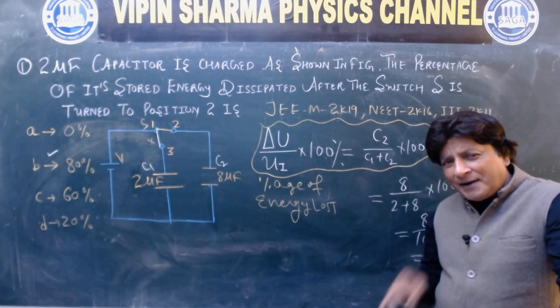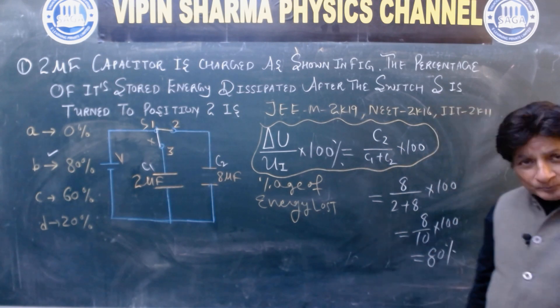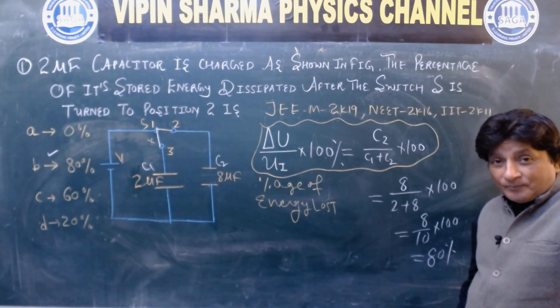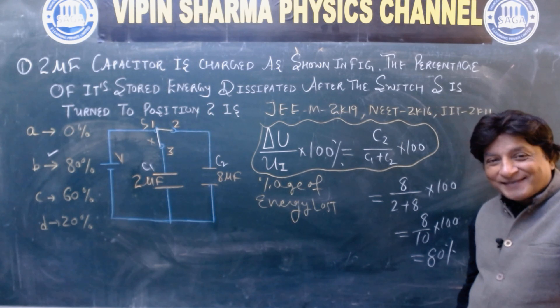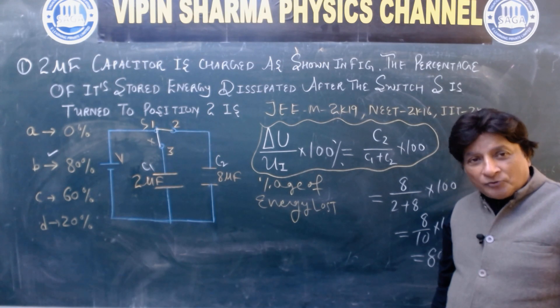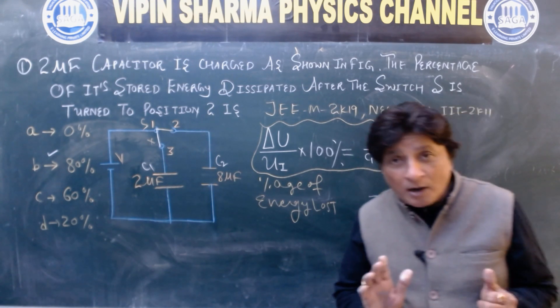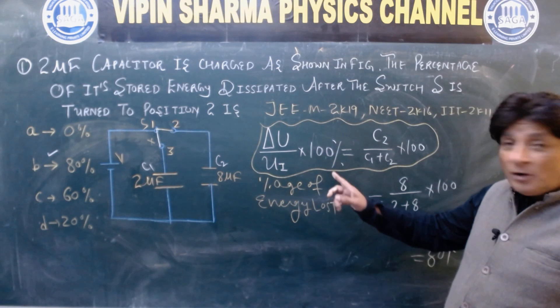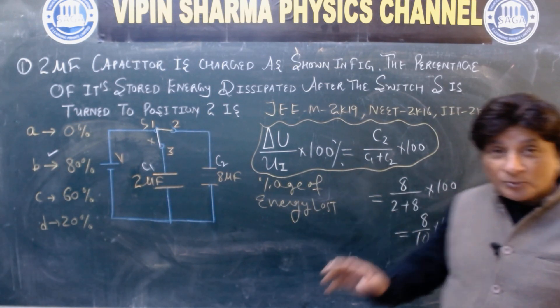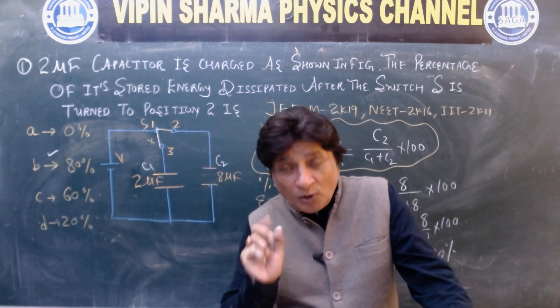From this you can get an idea that JEE Main and NEET have many questions that oscillate between them. I will solve more such questions for you. This formula you have to learn. Delta U upon Ui into 100 equals C2 upon C1 plus C2 into 100. If you want more such questions, you can WhatsApp me at 98141-21996. I will send you PDF.